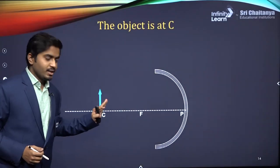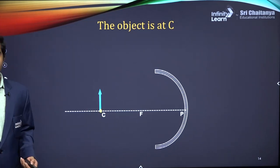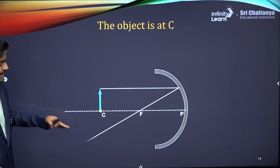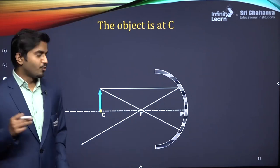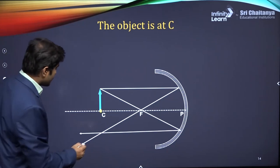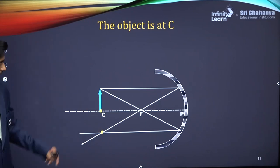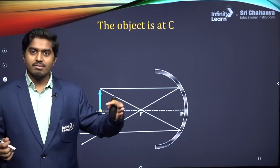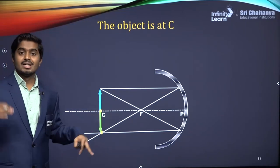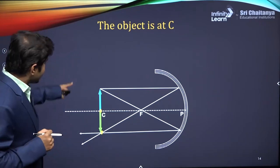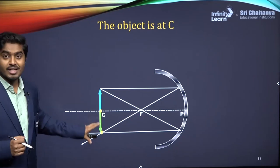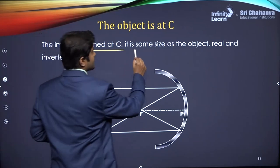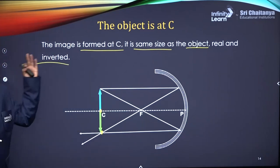Bring the object even closer — now placed at the center of curvature. The first incident ray is parallel to the principal axis and the reflected ray passes through the focus. The second incident ray passes through the focus and the reflected ray is parallel. These rays meet at the center of curvature. This is the only point where the size of the object and size of the image are exactly the same. Image forms at C — same size, real, and inverted.